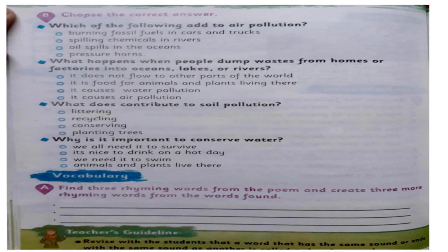جب petrol یا تیل سمندر میں گرتا ہے، pressure horn — جب ہم زور زور سے horn بجاتے ہیں — Number one: burning fossil fuel in the car and truck. گاڑیوں میں جب ہم petrol ڈالتے اور جلاتے ہیں تو اس سے دھواں نکلتا ہے جو air pollution پیدا کرتا ہے۔